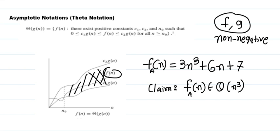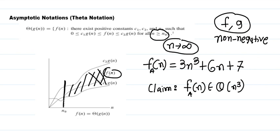The first requirement is to focus on n tending to infinity — we must analyze for very large values of n. This analysis is true only after a specific point n₀, so we are not interested in small values of n which are less than n₀. In other words, we consider only very large values of n.